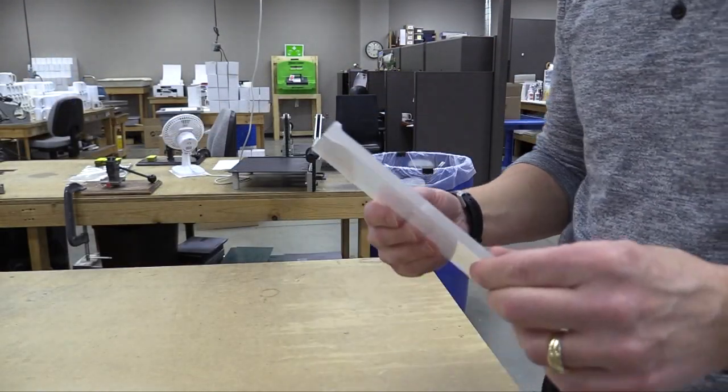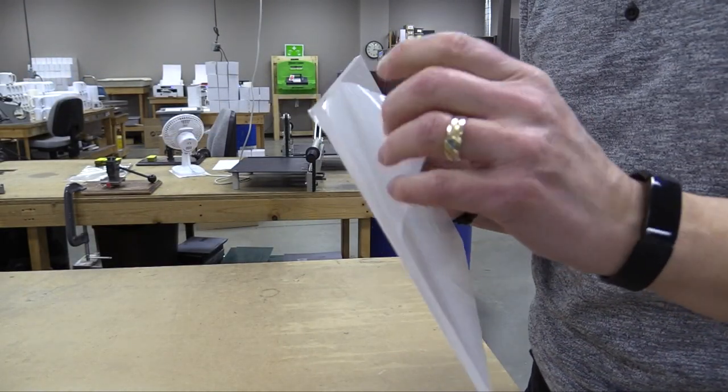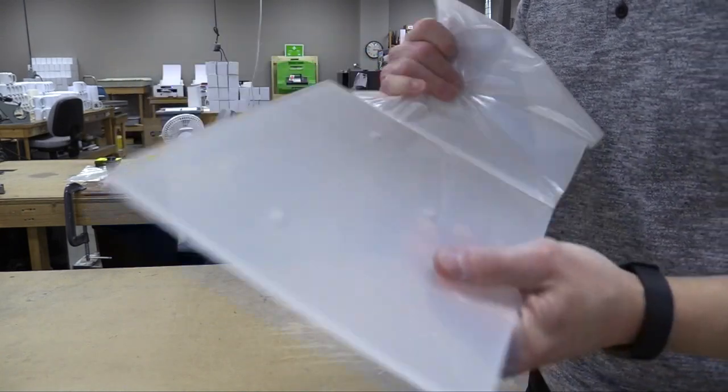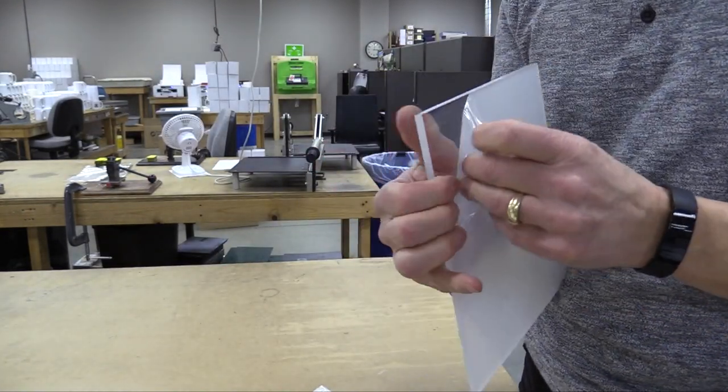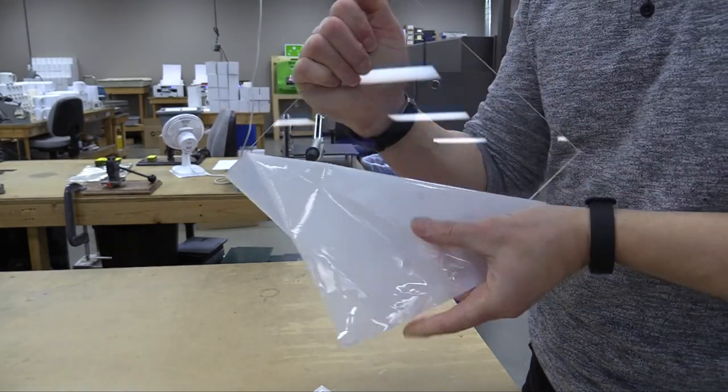Cast clear acrylic is available in sheets that are 11-3/4 by 23-1/4 inches, with thicknesses of 1/8 inch, 1/4 inch, 3/8 inch, and 1/2 inch.